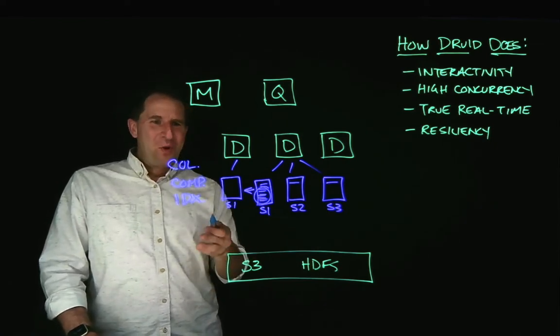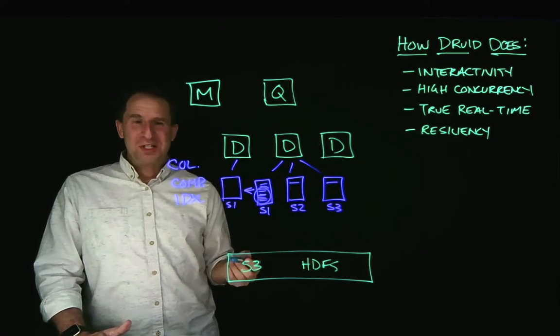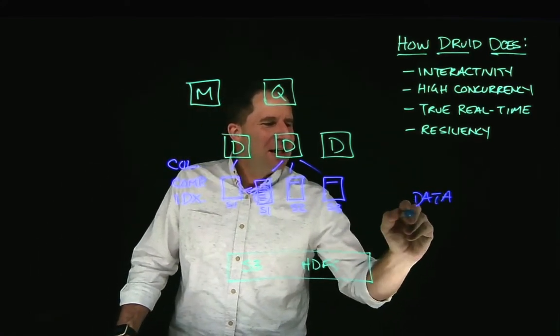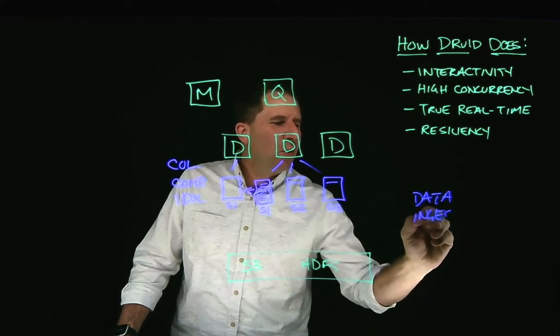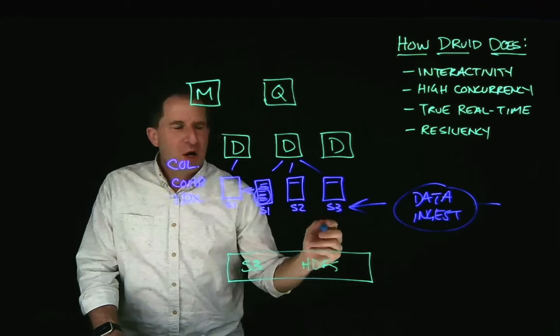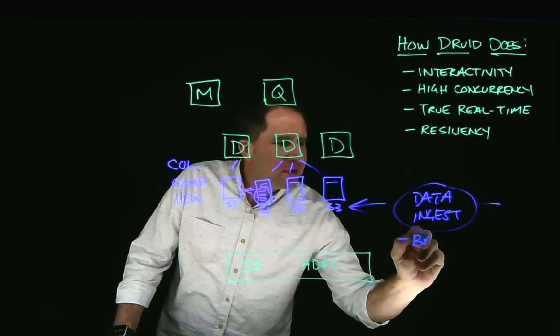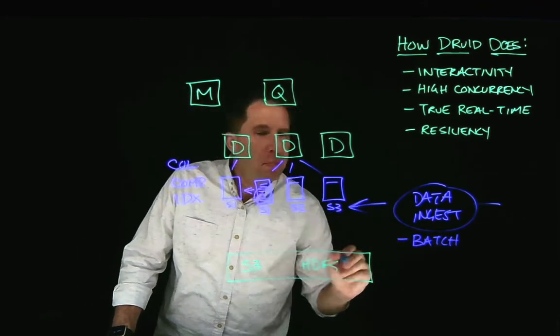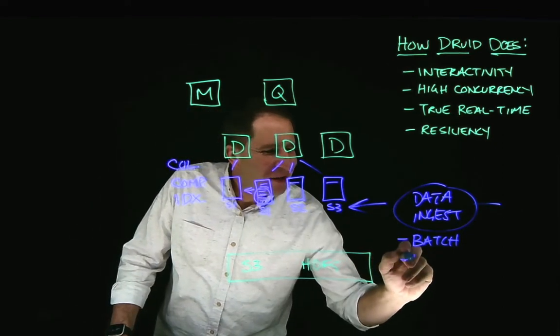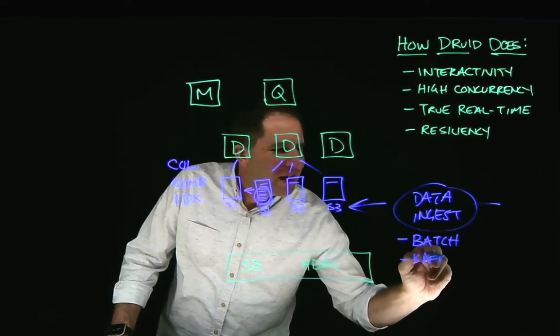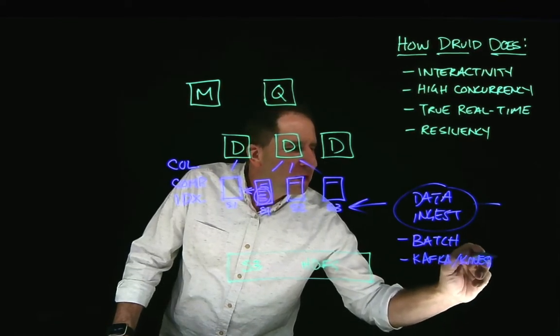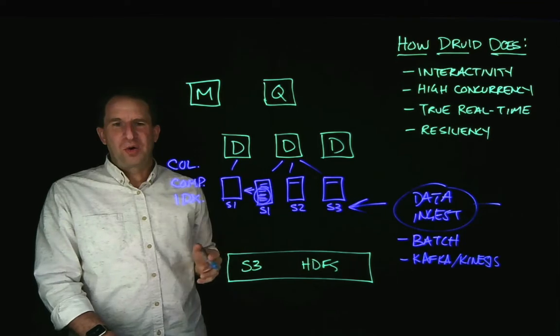All right. Once you've got this all set up, we just need to ingest some data. So data ingestion can happen for Druid two major ways. Of course, like every other database out there, we can do data in batch from various files, or for real-time data, we can bring in data from the Kafka API or Kinesis. We support these things natively, no connector needed.